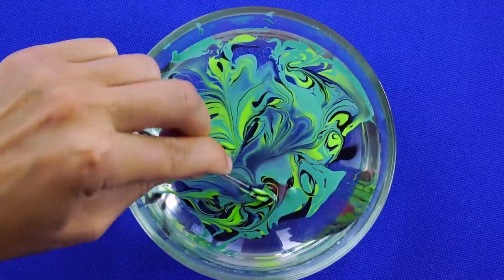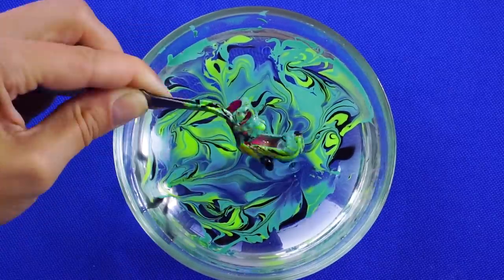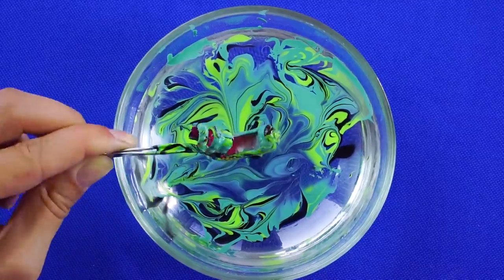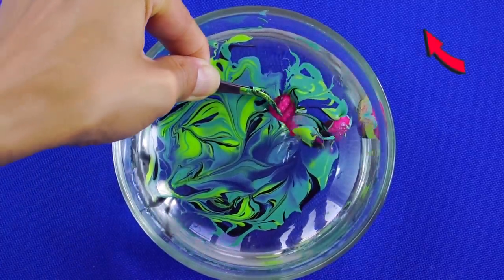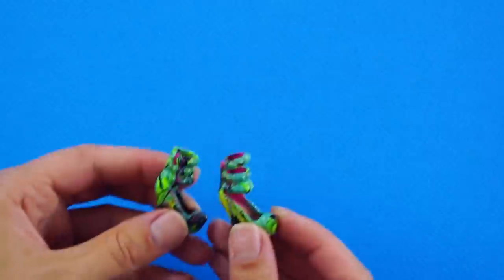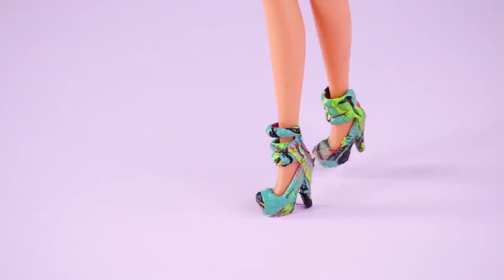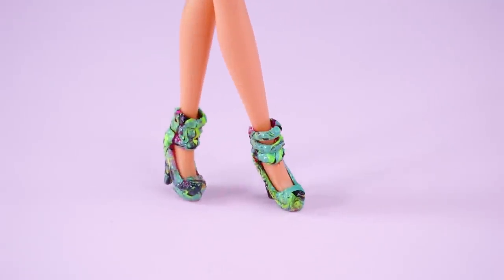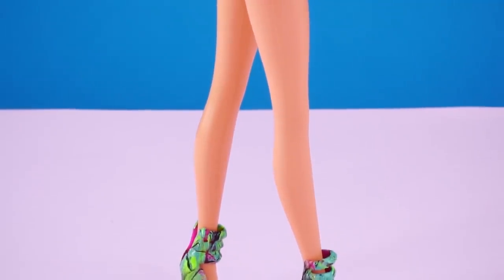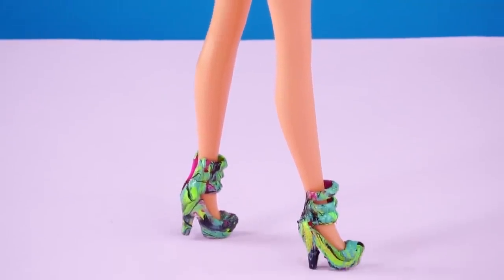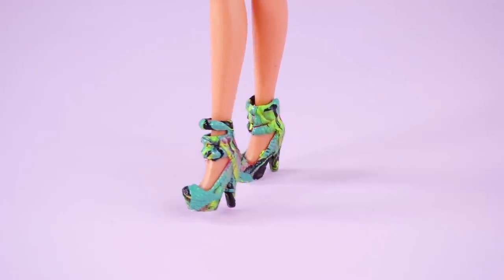Using a pair of tweezers, dip Barbie's shoes into the nail polish. It will stick to the shoe as you pull it up and out of the water. When they're dry, Barbie will have the coolest shoes in town. She's going to be the life of the party! Very stylish, Barbie!